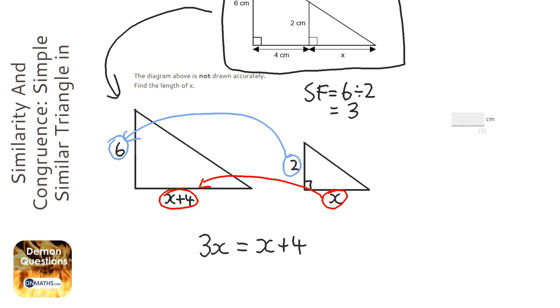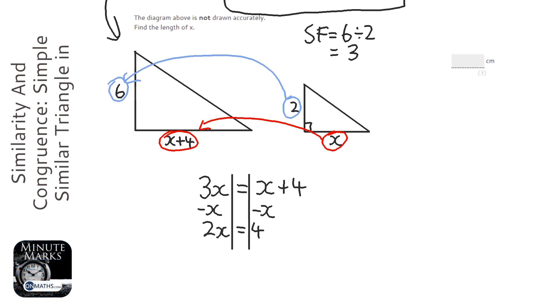So first thing, if you've got x on both sides, you will take away the smaller amount of x. So I'm going to take away x from both sides to get 2x equals 4. Let's extend the lines a little bit and I'm going to divide by 2 both sides to get x on its own, so x equals 2.